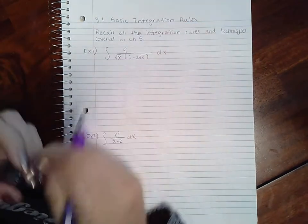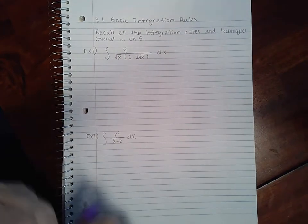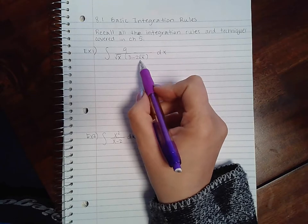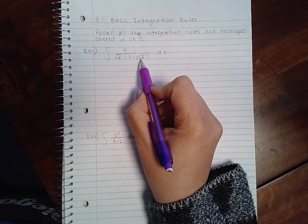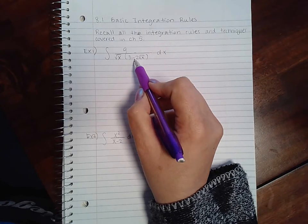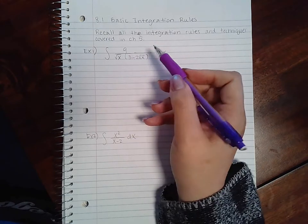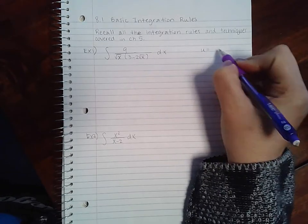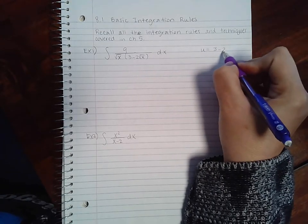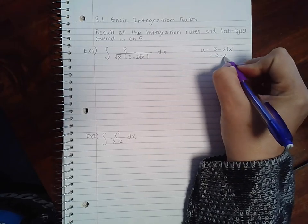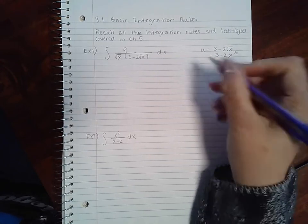And the trig rules and things like that. Okay, so for this particular problem, I know that when I take the derivative of the square root of x, I get 1 over the square root of x. So I have a feeling that I could do this problem with u-substitution. So if I let u equal 3 minus 2 square root of x, or 3 minus 2x to the 1/2...